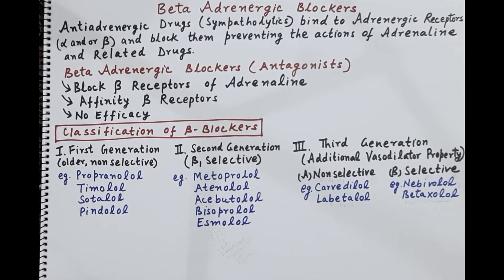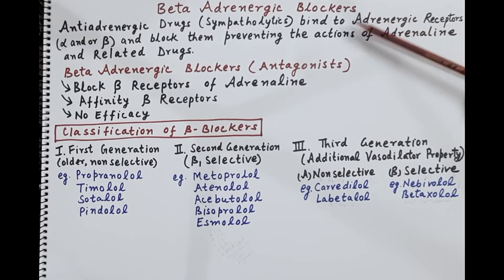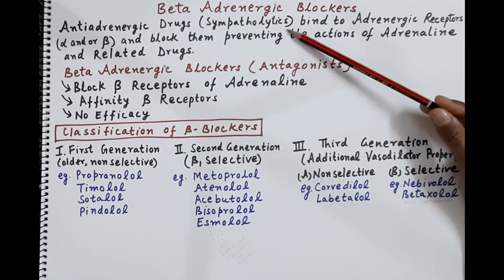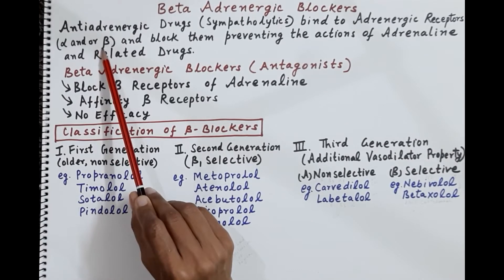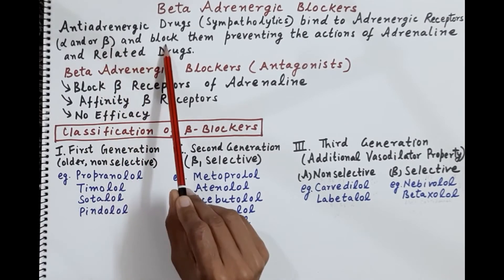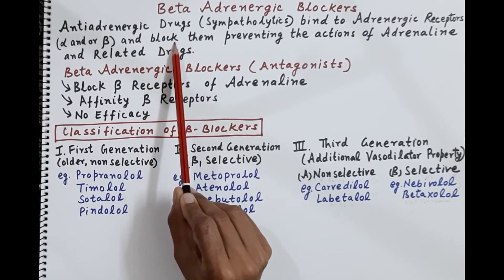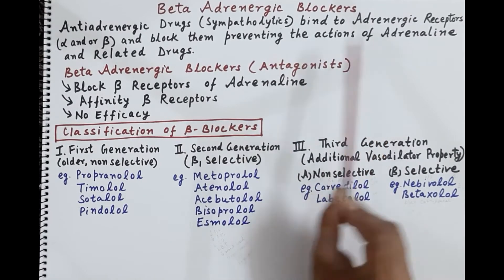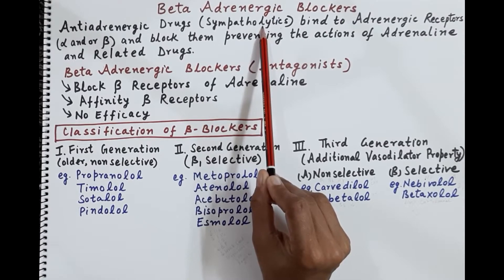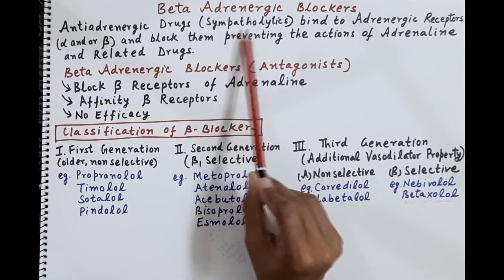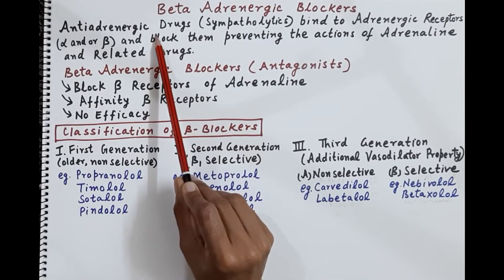In today's session we are going to discuss sympatholytics. Sympatholytics are the anti-adrenergic drugs — these are the drugs that bind to adrenergic receptors, that is alpha and/or beta receptors. These drugs block the alpha and beta receptors, and by blocking these receptors they prevent the action of adrenaline and related drugs. Therefore, sympatholytic drugs antagonize the actions of adrenaline and related adrenergic drugs, and are also called anti-adrenergic drugs.